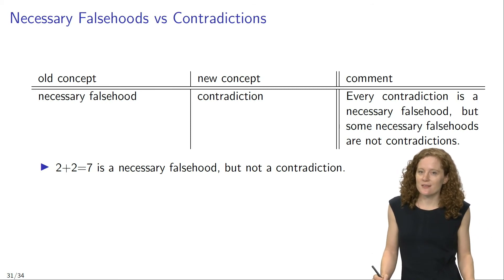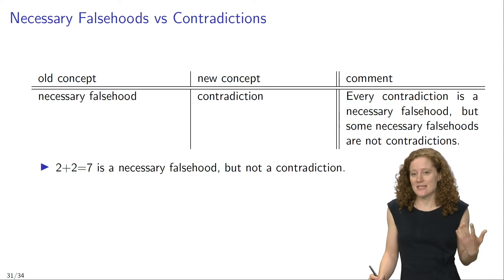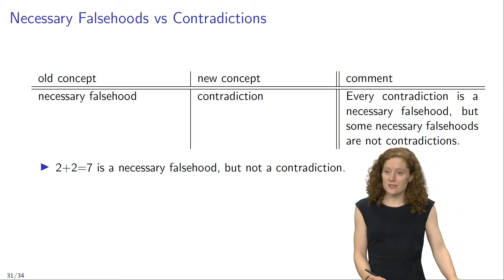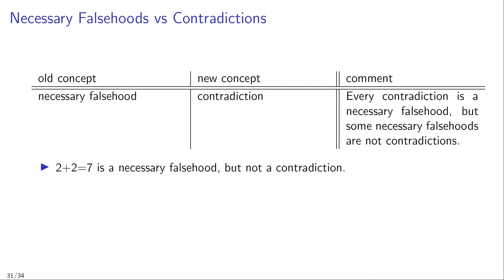'2 plus 2 equals 7' is a mathematical falsehood. Assuming that every mathematically false sentence is necessarily false, it follows that this sentence is a necessary falsehood. But if we construct the truth table for that sentence, it is going to contain a row that represents it as true. This sentence is an atomic sentence, so we represent it by capital letter A, and the truth table for A contains two rows — one in which it is true and one in which it is false.